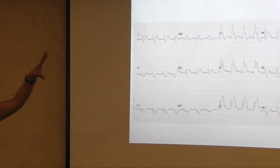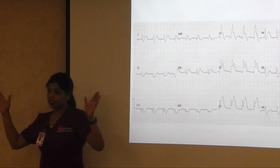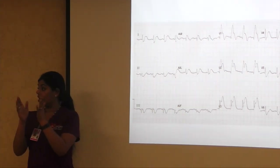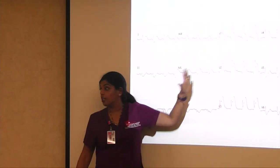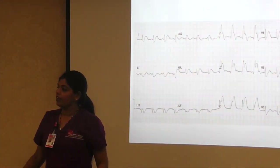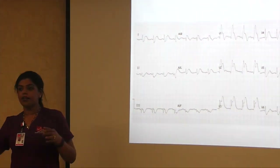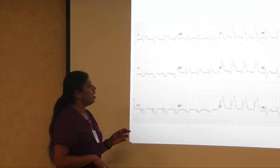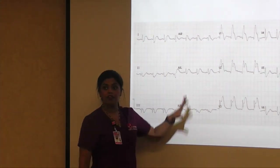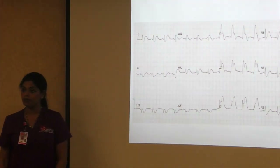Moving to V1, V2, V3 — there's also ST elevation there, maybe even V4. So ST elevation in V1, V2, V3, V4 is anteroseptal MI. The LAD gives off septal branches first, then diagonal branches to the lateral wall, then the anterior wall — this is a proximal LAD occlusion. That's why you're getting ST elevation in the anterior septum and the high lateral wall. AVR may show some ST elevation too, but when other leads already have ST elevation, you don't call left main — AVR is only significant when it's isolated. So this is an anteroseptal lateral ST elevation MI.